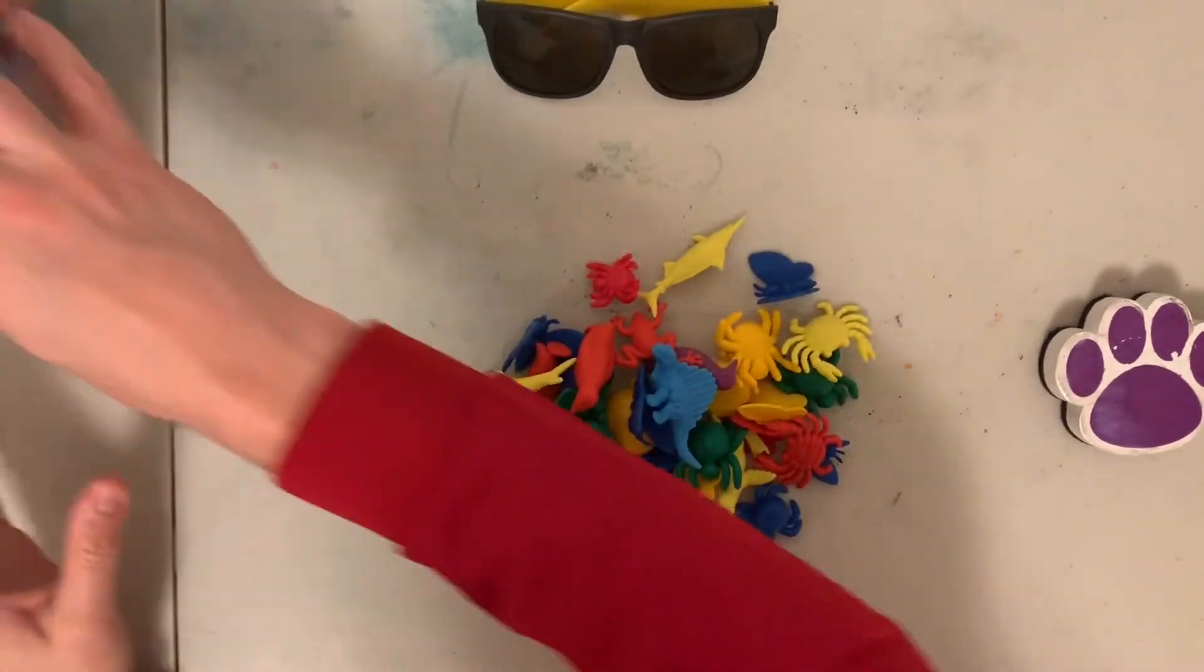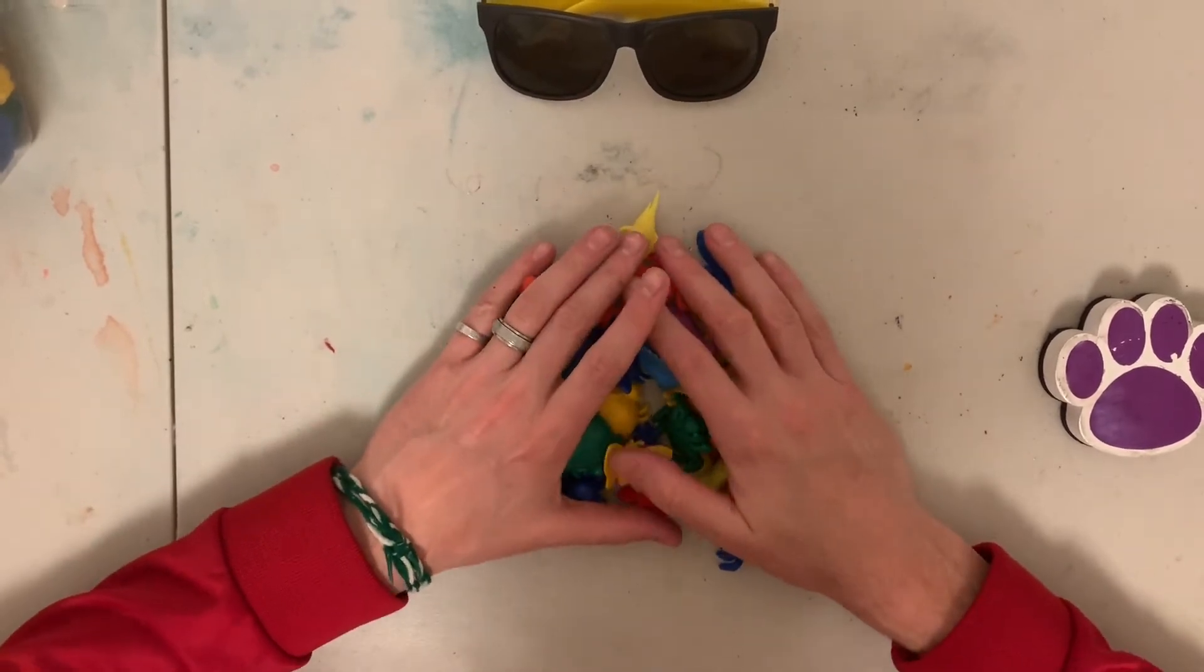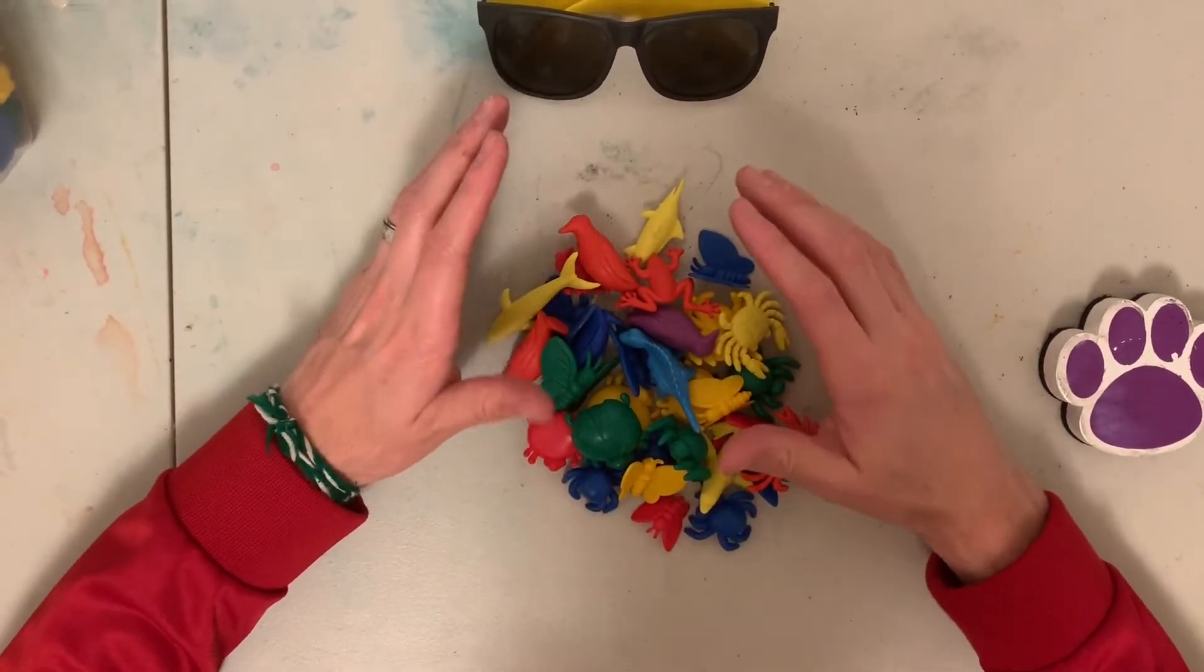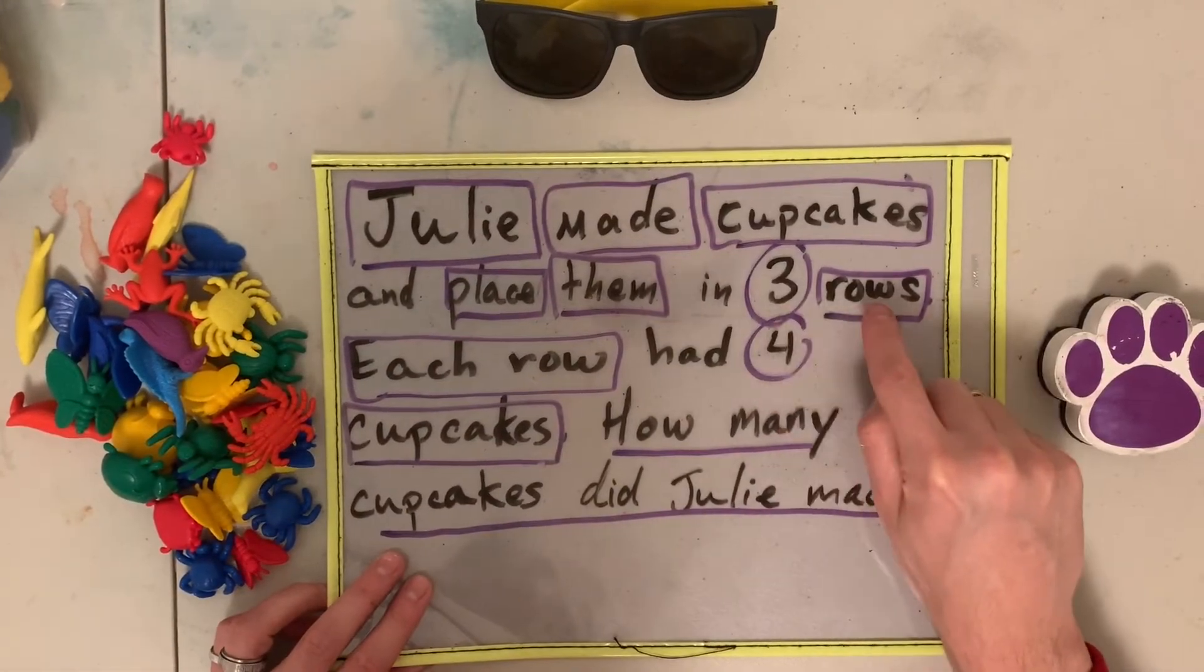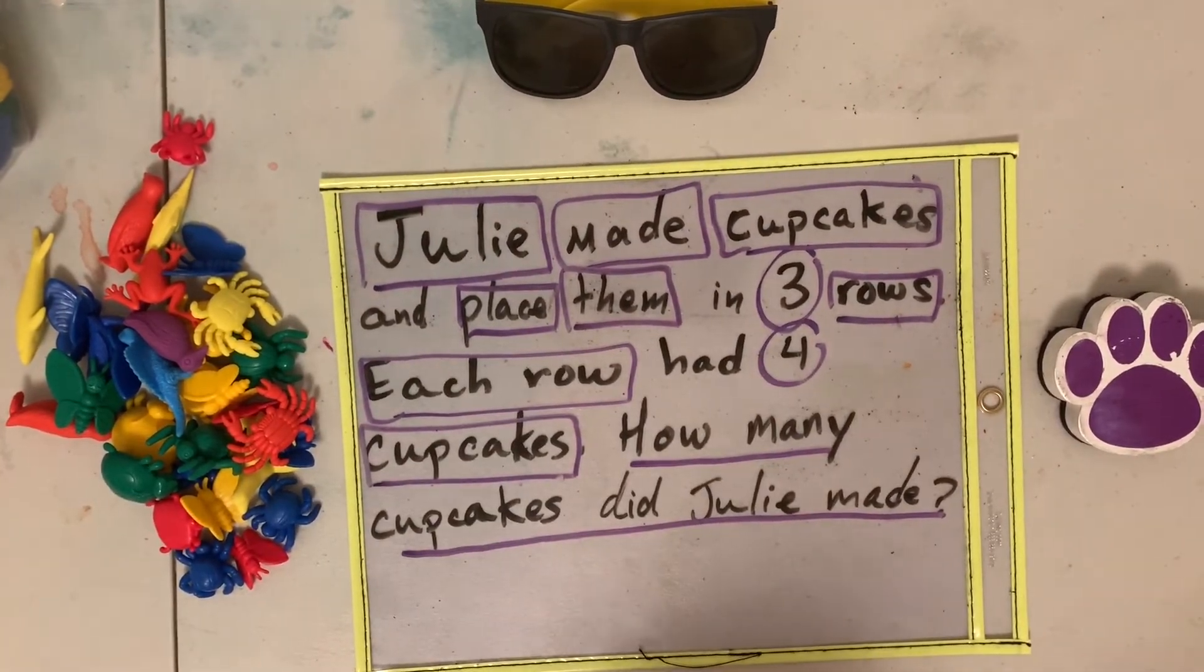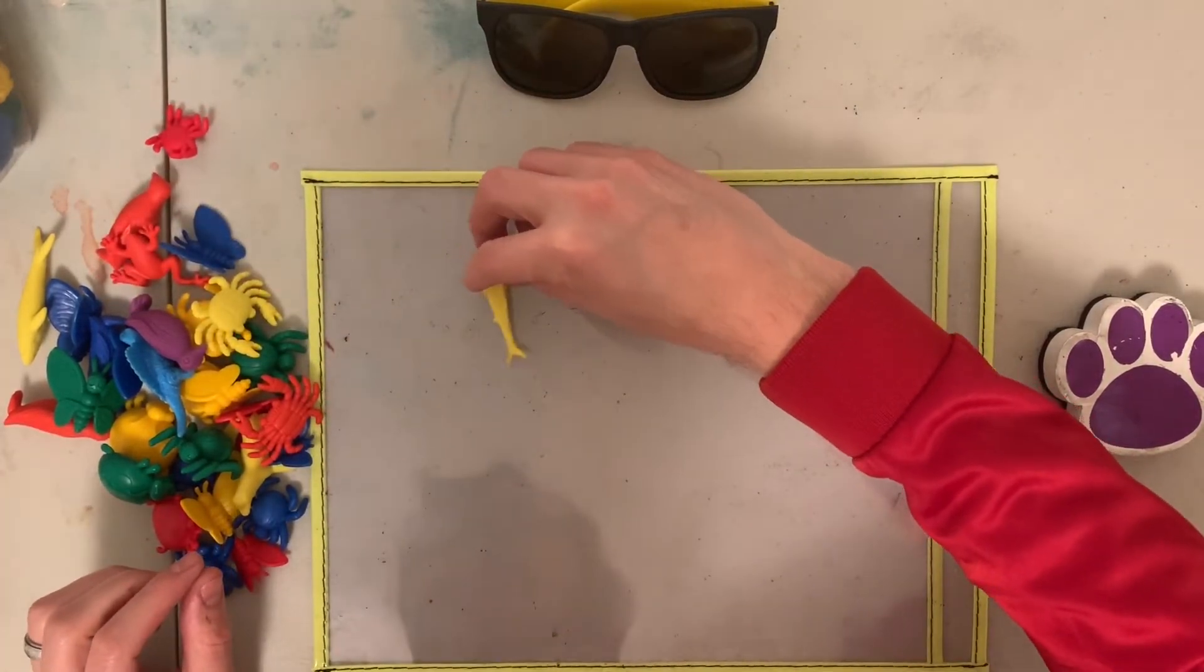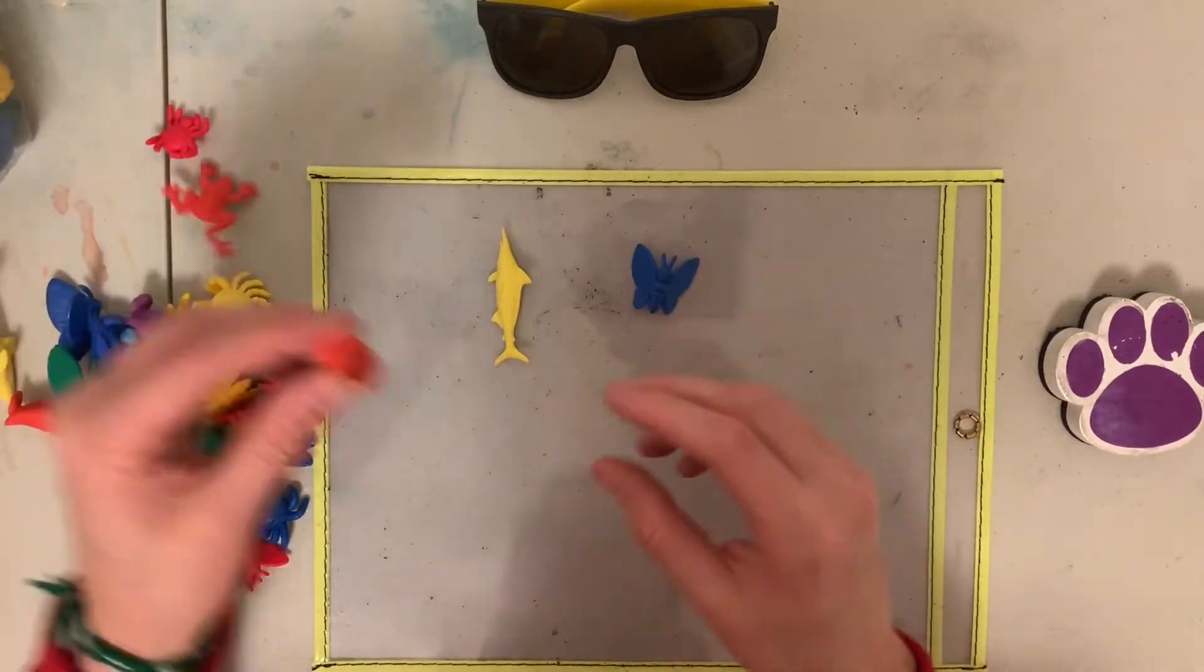Now, let's think about it. Imagine, these animals are cupcakes. Imaginemos que estos son cupcakes. Si no tienes juguetes, puedes dibujarlos entonces, okay? If you don't have toys, you can draw them. So, on the word problem, we need to remember it says three rows. Tres filas. So, I'm going to use three rows. Tengo tres filas. So, I have row number one, row number two, and row number three.